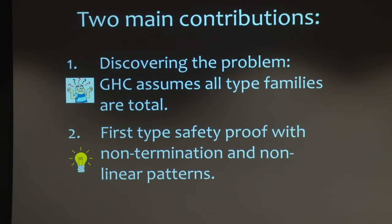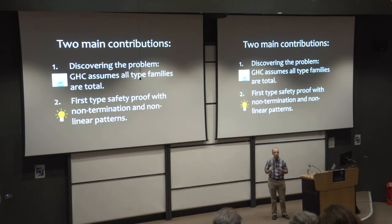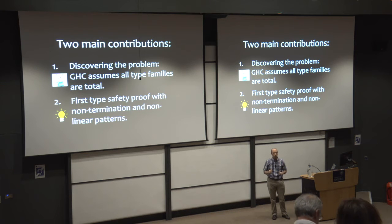So this paper has two main contributions. The first is the discovery that GHC assumes all of its type families are total. I don't expect necessarily you to understand what I'm saying there yet. We'll flesh that out. And also, this work provides the first proof of type safety for system FC that has both non-termination and non-linear patterns in type families. So there's been a lot of papers that talk about this proof, but each cleverly danced around having both of these features, even though both have been present in GHC for years.